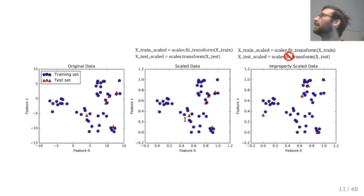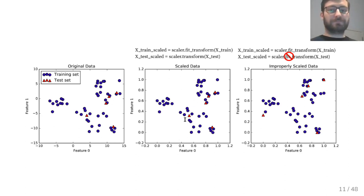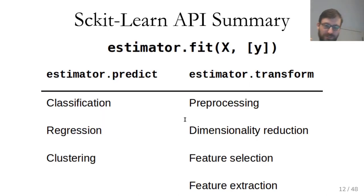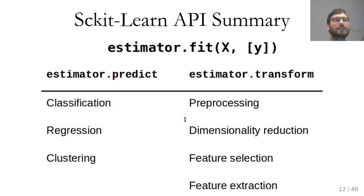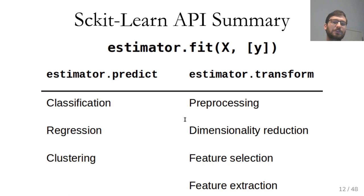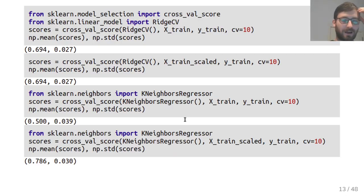Note: fit_transform is just a shortcut to call fit and then transform on the same data set. To recap the scikit-learn API: everything has a fit method taking data matrix X and optionally target y. There's a predict method used for classification, regression, and clustering. The transform method is used when you want a new representation of the data — used for pre-processing, dimensionality reduction, feature selection, and feature extraction.